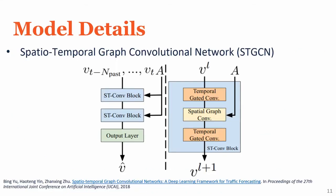I would now like to walk you through the architecture we used for this work. What we ended up using is a previously developed model known as the spatiotemporal graph convolutional network, and we're going to take a high-level view of this architecture. This model takes as input past data along an entire graph and that graph's adjacency matrix. Two of the larger blocks in this model are the stconv block and the output layer, and these are each composed of multiple operations. We break down the stconv block, and we have two more fundamental operations that can be applied to the data to capture different dimensions.